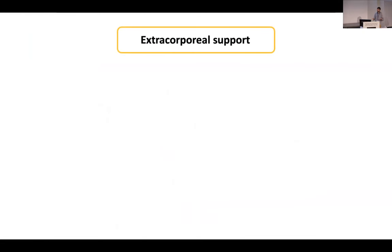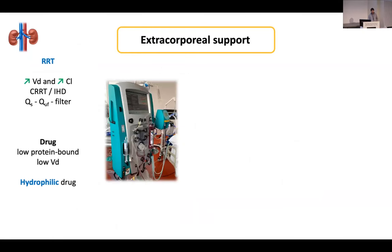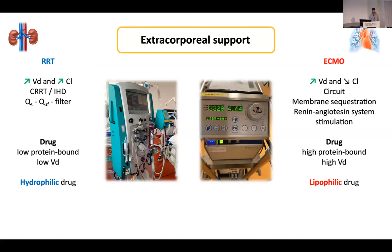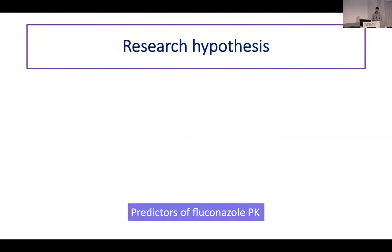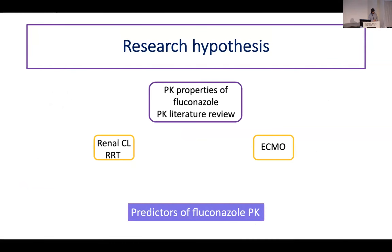What can we expect from fluconazole in patients receiving ECMO and RRT? We know that RRT mainly influences hydrophilic drugs, especially those with low protein binding and low molecular weight. ECMO on the other hand mainly affects lipophilic drugs through membrane sequestration. When both are combined, we have no idea of the net outcome for the drug. Like clinical studies, PK studies need a research hypothesis. Based on fluconazole's physicochemical properties and literature review, renal clearance and RRT will likely influence fluconazole — but for ECMO, based on the literature, probably not.